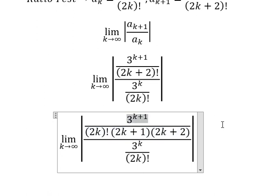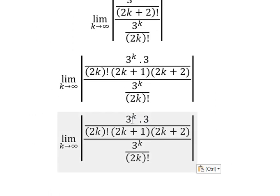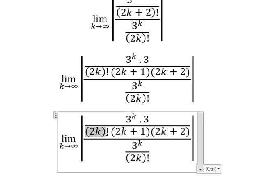So about this one, we can put like this: 2k factorial multiplied by 2k plus 1 and 2k plus 2. This one we have 3 to the power of k multiplied by number 3. So we need to simplify 3 to the power of k over 2k factorial and you got like this.